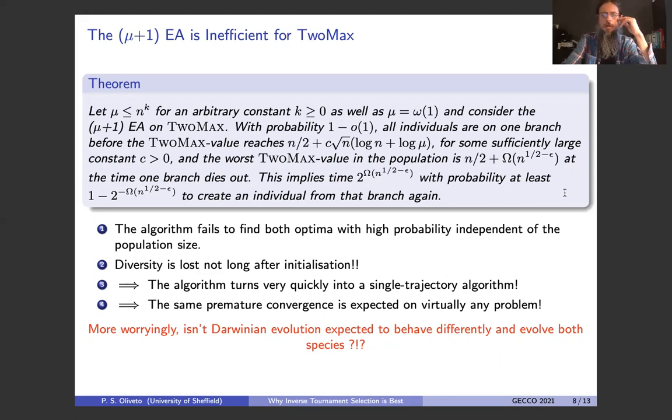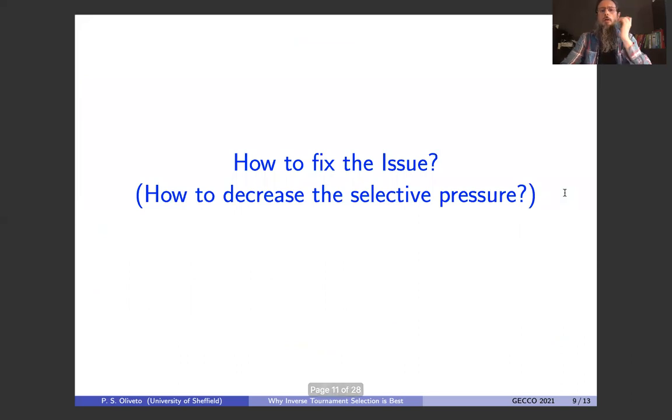So this insight here implies two very important things. The first thing is that the algorithm turns very quickly into a single trajectory algorithm. The second thing is that since we lose diversity very quickly, the behavior is likely not only to hold for TwoMax, but for large classes of functions. What troubles most of all is, but shouldn't Darwinian evolution be evolving the two optima of TwoMax anyway? So the question is how do we decrease selective pressure? One point could be maybe the model that we're using for evolution is not correct.